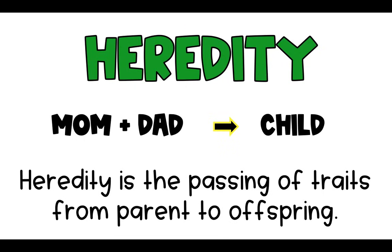Each characteristic has two sets of instructions in our DNA, but only one of those is going to show up in your physical appearance. We're going to talk about how we figure out which one actually showed up and what happens to that other set of instructions — where did it go?